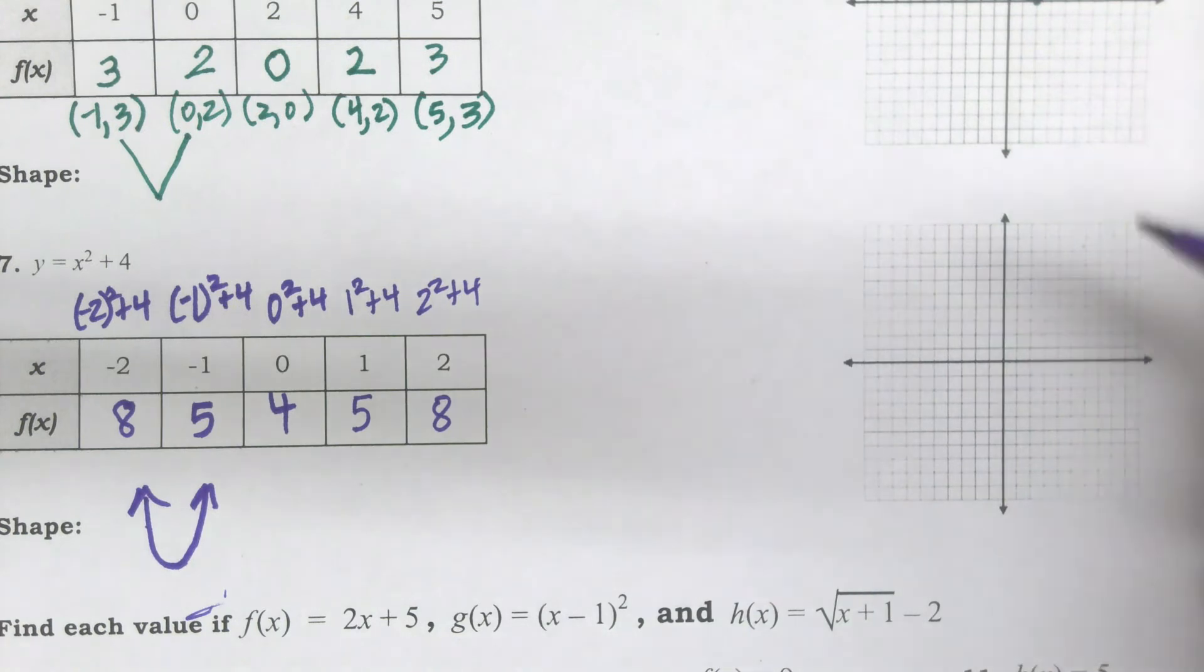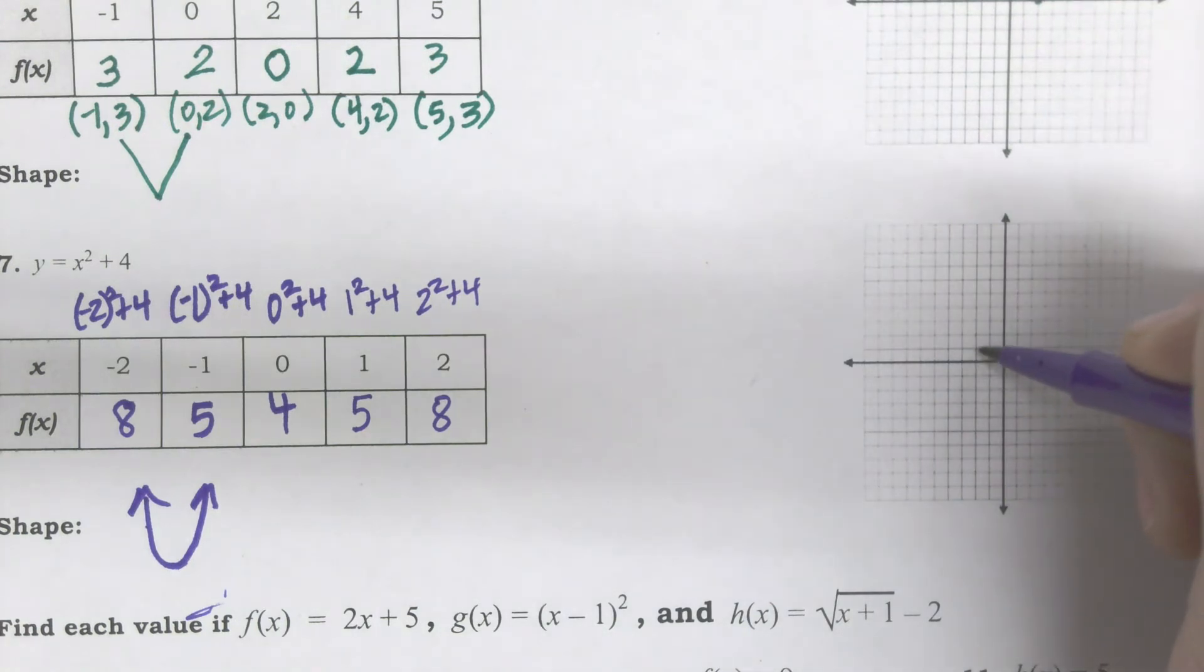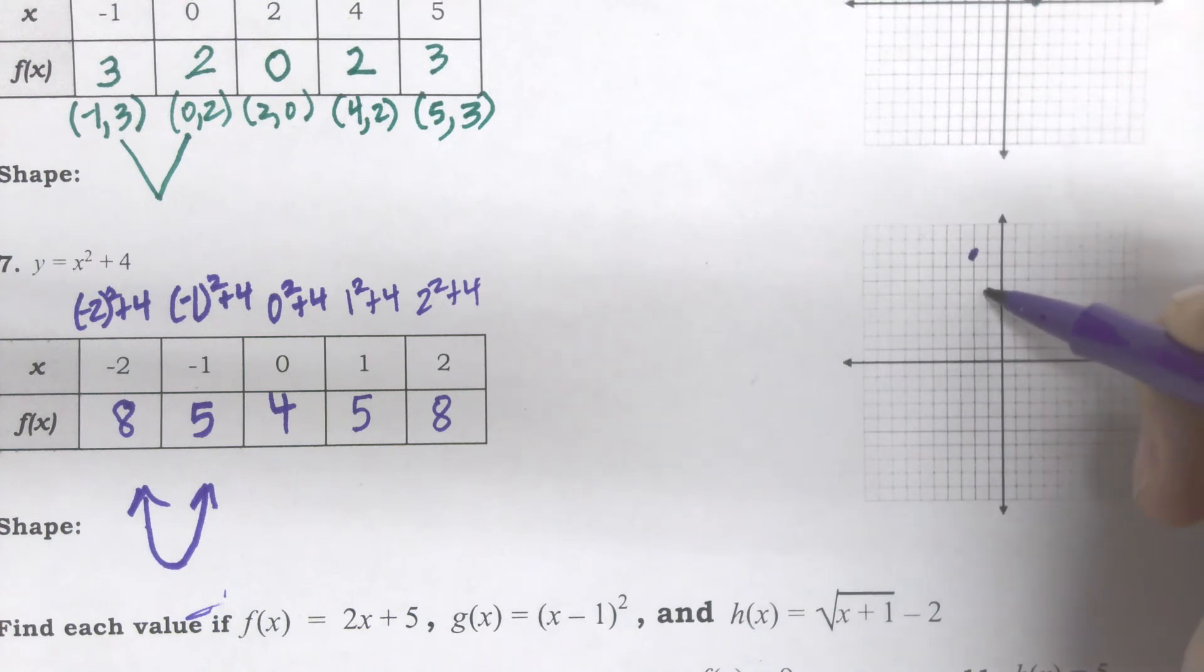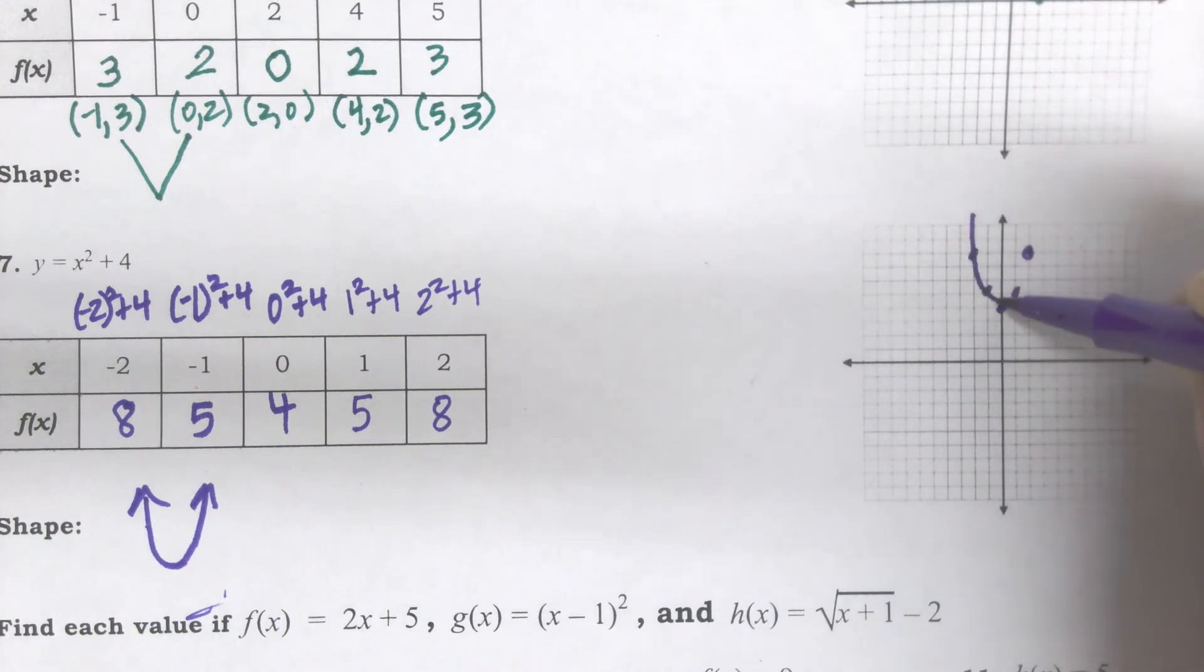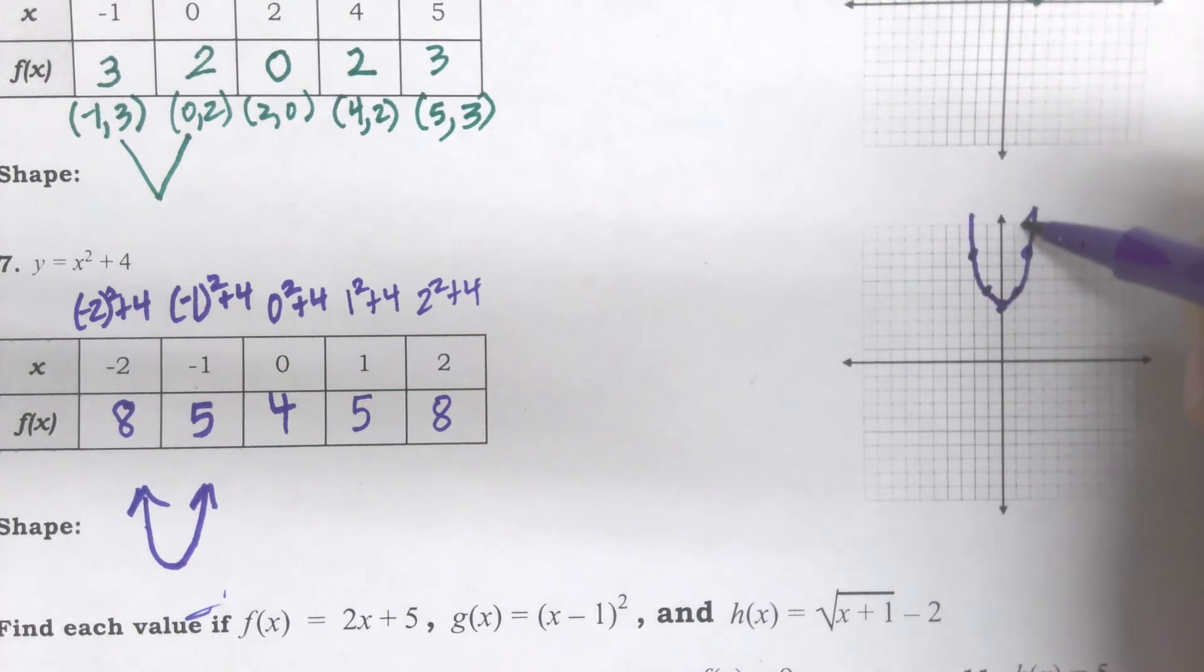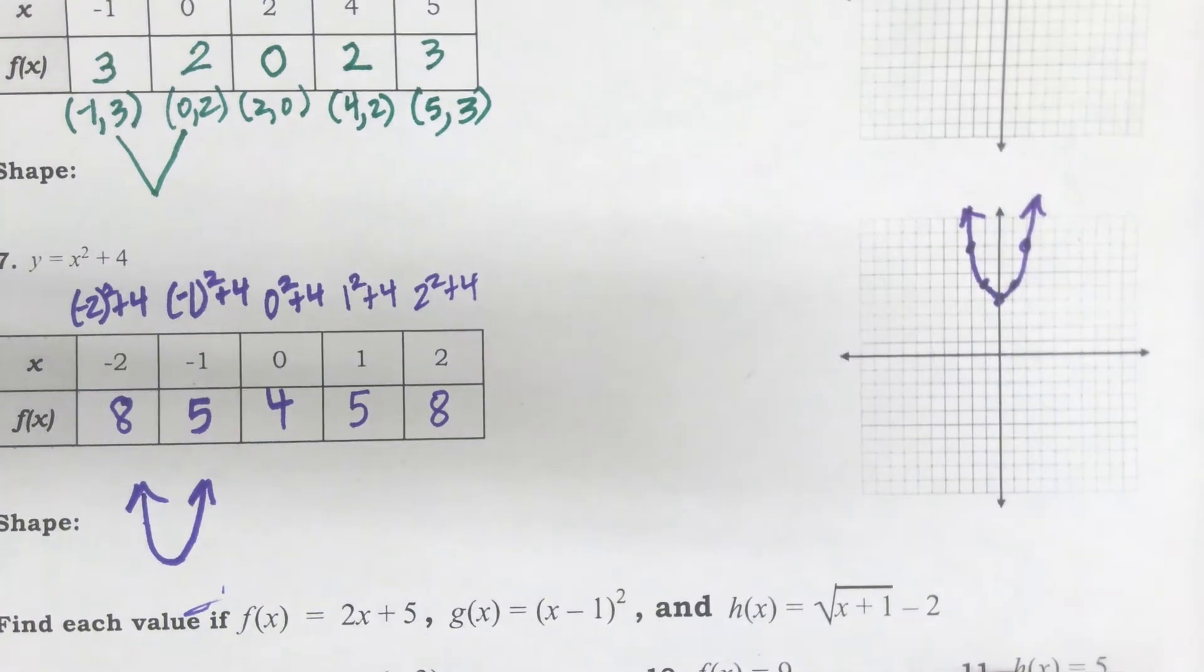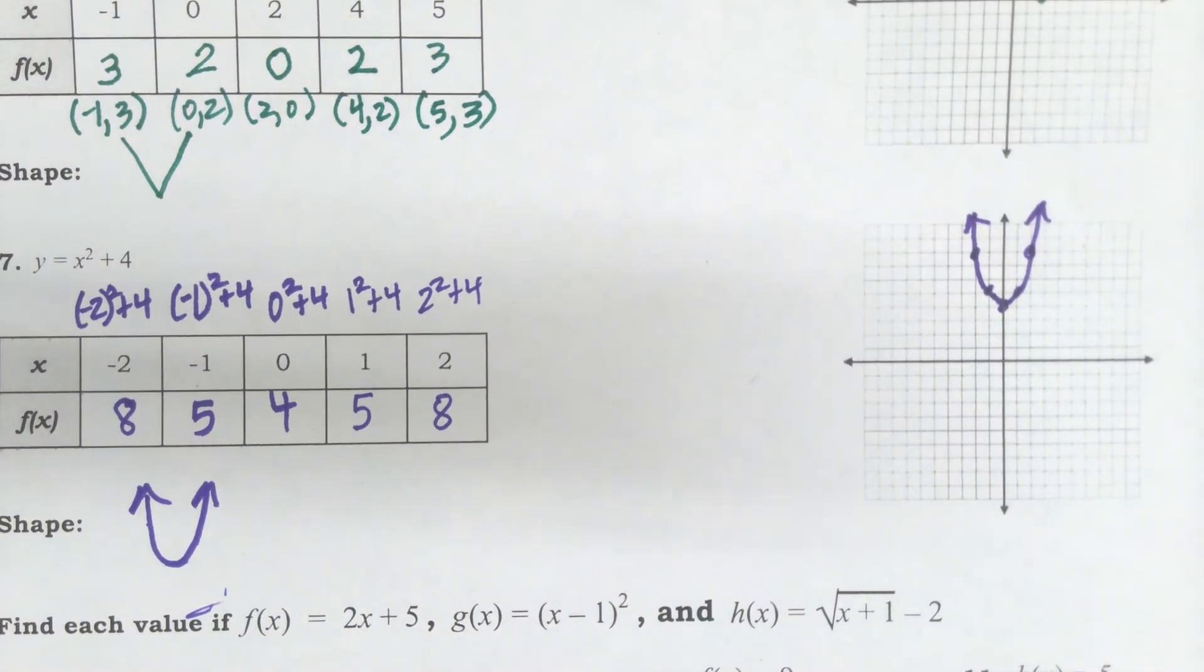Whenever you see a squared and an absolute value, because they have that shape where it curves back up or it goes back up, you should see this kind of thing happening, this pattern where it's kind of going to mirror reflect. And so when I plot those, negative 2, 8, 1, 2, 3, 4, 5, and negative 1, 5, 0, 4. Then I do my mirror reflects, 1, 5, and 2, 8. And then I can draw my sort of curved shape, almost like a U.